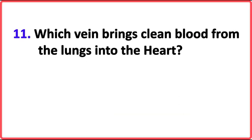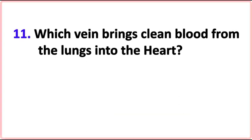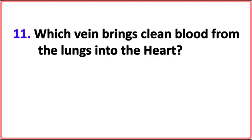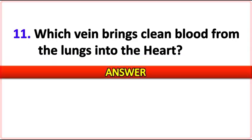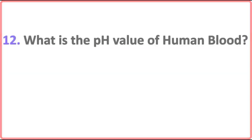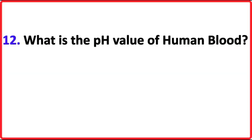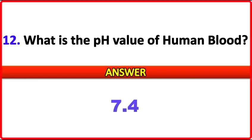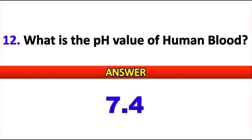Which vein brings clean blood from the lungs into the heart? Answer: Pulmonary veins. What is the pH value of human blood? Answer: 7.4.